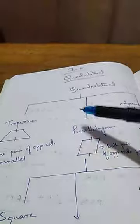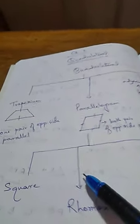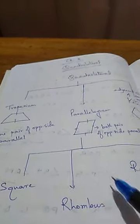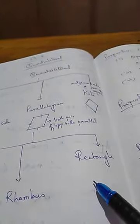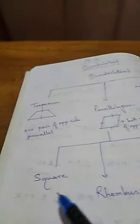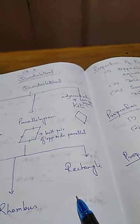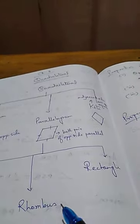Now there are sub-divisions of parallelogram. Three sub-divisions of parallelograms are there. One is called square, another is rhombus, and another is rectangle.